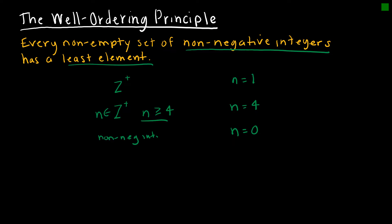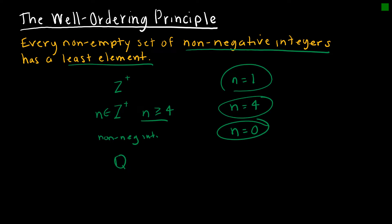Now why is it important to know what the least element is? Because in mathematical induction you must start with the least element. If I told you to instead use the rationals Q, is there in fact a least rational number? No, there's not. The well-ordering principle talks only about integers — there's no least element in the rationals because to make a rational number smaller I just divide by a larger value. So it's really important that we understand the well-ordering principle works with non-negative integers, and that's why up to this point all of our induction examples have used non-negative integers.